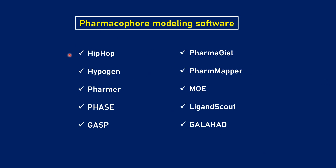The different software available for pharmacophore modeling include HipHop, HypoGen, FARMER, PHASE, GASP, PharmaGist, PharMapper, MOE, LigandScout, and GALAHAD. Some are free to use and some are paid software.